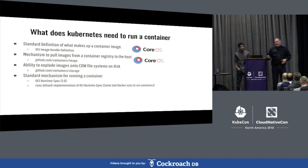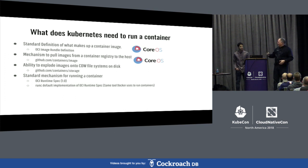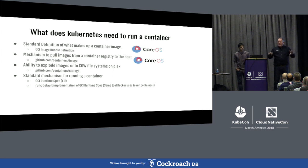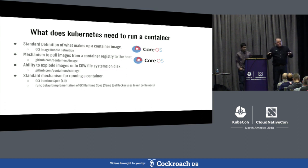RunC came out of libcontainer, which was donated to OCI by Docker. It's still at 1.0 but pretty much everybody in the world running traditional containers is using RunC. Docker uses it, CRI-O and all the tools we're talking about today use RunC. There are other OCI runtimes that have come along, like Kata Containers and gVisor — they all implement OCI, read the specification, and launch a container.